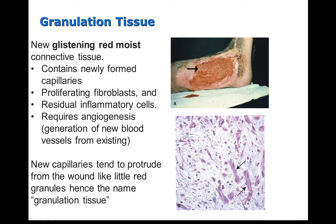When damage is severe or persistent, repair can't be accomplished with regeneration alone. In this situation, granulation tissue is formed, followed by the formation of scar tissue. Granulation tissue is new, glistening, red, moist connective tissue — it honestly looks a lot like steak or hamburger. The tissue is rich with newly formed capillaries that protrude from the wound and look like little red bumps or granules, and that's how the tissue got its name. Granulation tissue is often referred to as beefy red tissue.